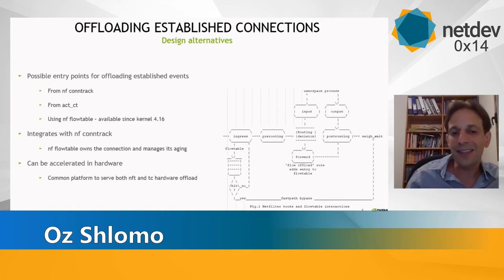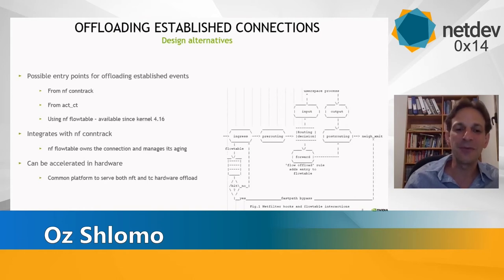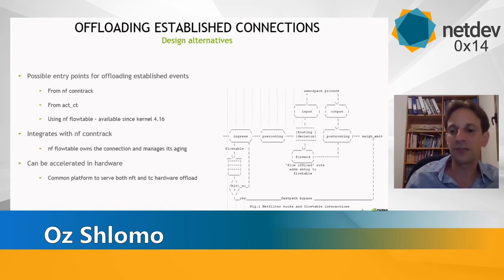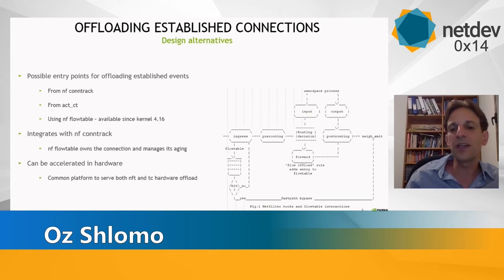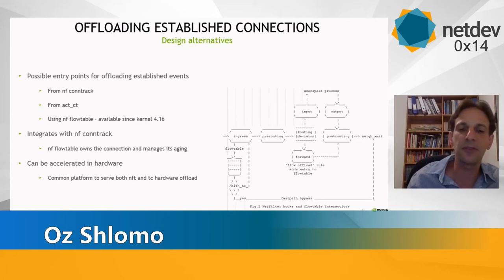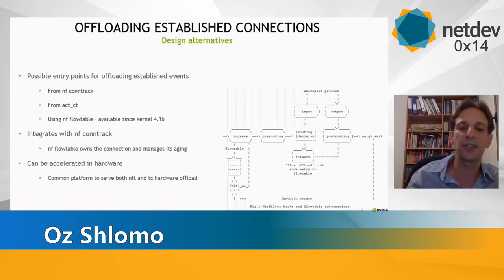Pablo, who is the maintainer of this netfilter code, also wanted to offload this flow table — we wanted it for CT offload work, and Pablo wanted it to accelerate NF processing in hardware. So it made sense for us to work together and generalize the flow table mechanism, making it part of the core engines so it could be instantiated and managed from two different modules, sharing the capability of offloading connections in that table.